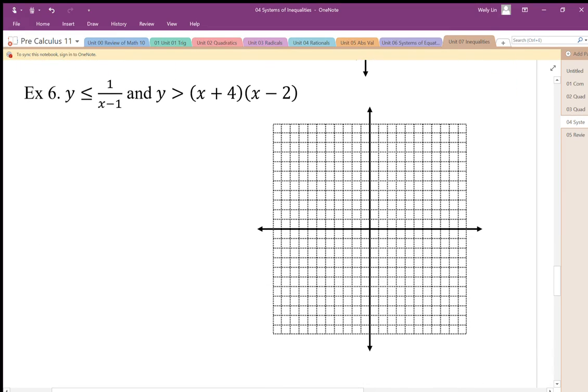This one here, we're going to graph a rational function and a parabola. I'm going to start with the parabola since we've been doing parabolas. This is given in the factored form, so I'm going to use the zeros and then find the vertex by just counting to the middle. At negative 1, I'm going to have negative 9.